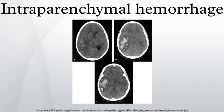Diagnosis – Computed tomography – A CT scan may be normal if done soon after onset of symptoms. A CT scan is the best test to look for bleeding in or around the brain. In some hospitals, a perfusion CT scan may be done to see where the blood is flowing and not flowing in the brain.